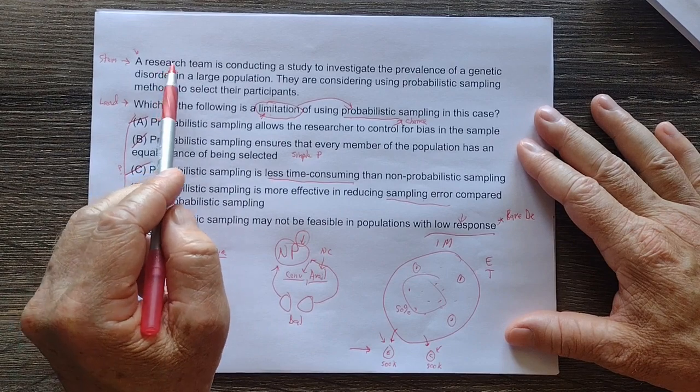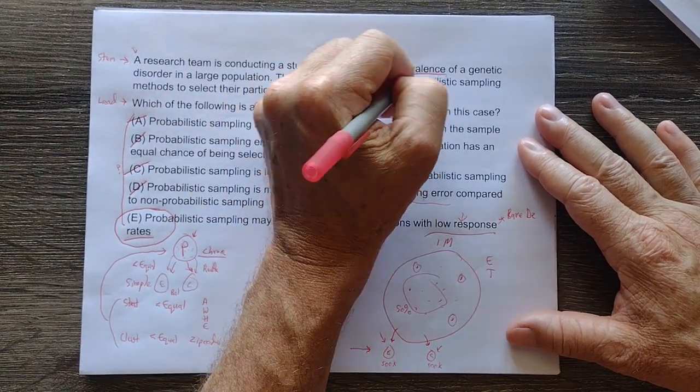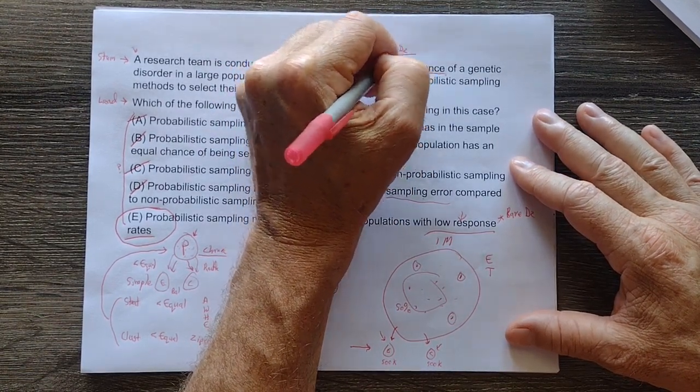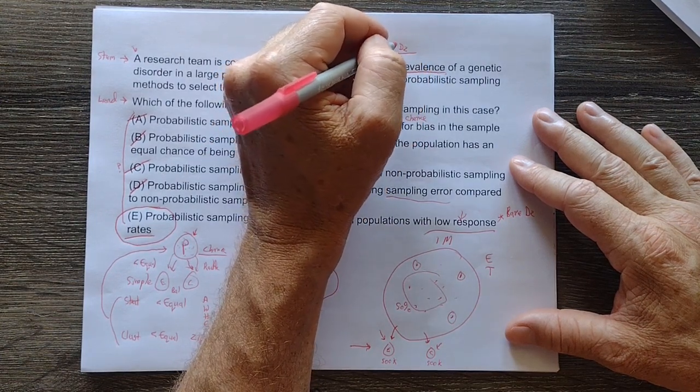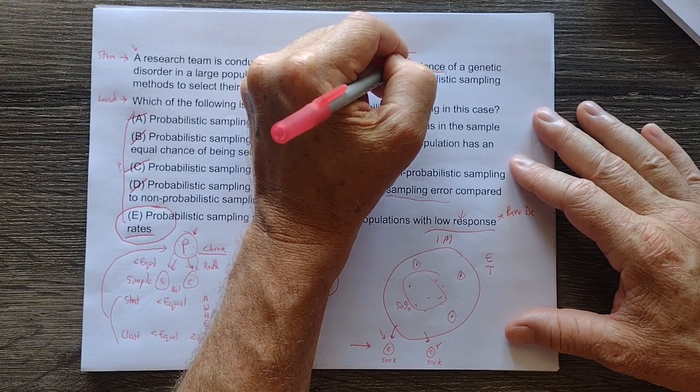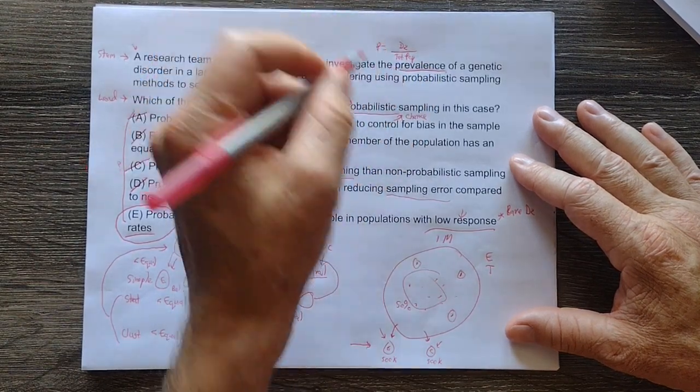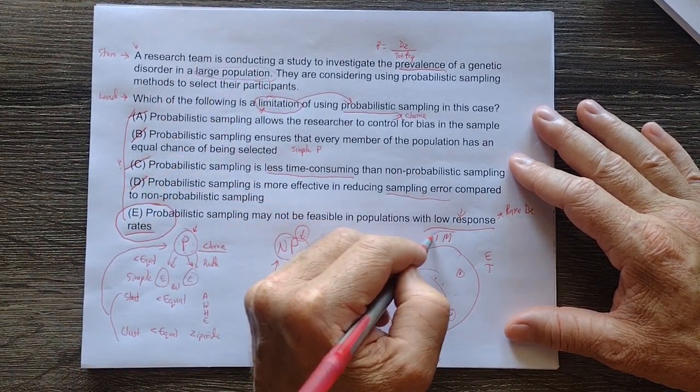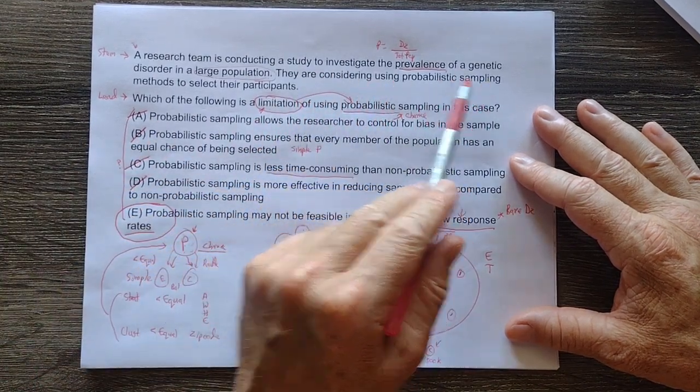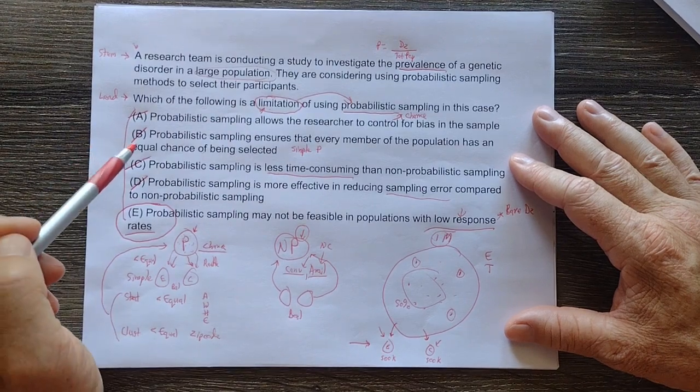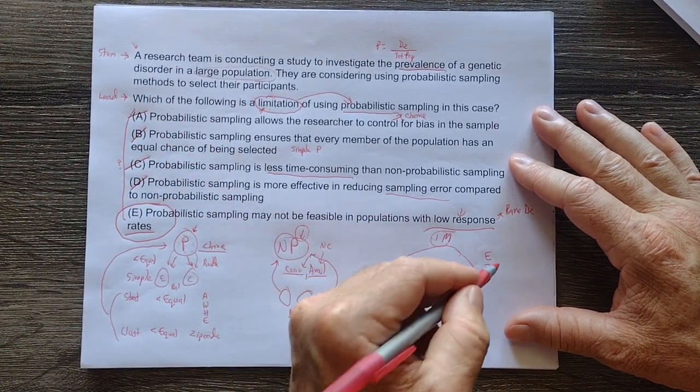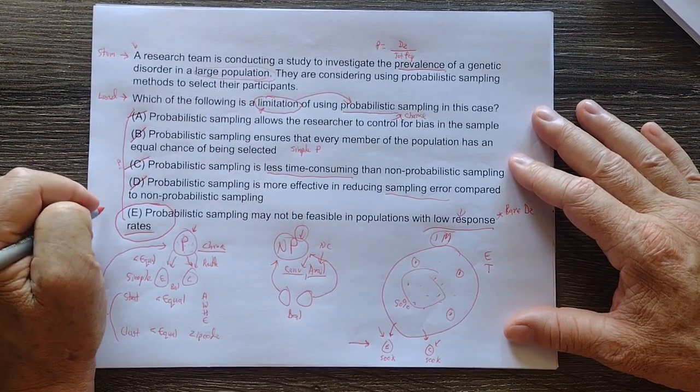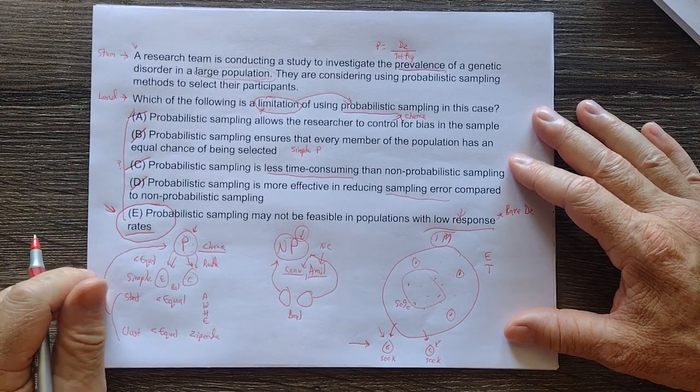Now let's go back to the stem. A research team is conducting a study to investigate the prevalence. So we talk a lot about prevalence, right? And that is the total people that have the disease in a population at a specific time over the total population at a specific time, right? Okay, so that's the prevalence of a genetic disorder in a large population. This is a large population here, 1 million. They are considering using probabilistic sampling to select their participants. Well, in that situation with a large population, if we had a rare disease or we had a low response rate in this large population, E is now definitely the most correct answer. I hope you agree.